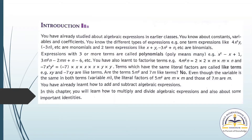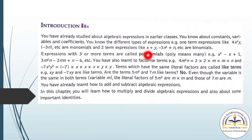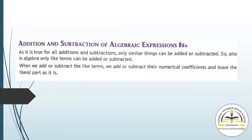First we will see the introduction part. You have already studied about algebraic expressions in earlier classes. You know about constants, variables, and coefficients. You know the different types of expressions: one-term expressions like 4x²y or −3n are monomials, two-term expressions are called binomials, and more than two terms are called polynomials. This is the introduction part as you already learned in your previous classes.